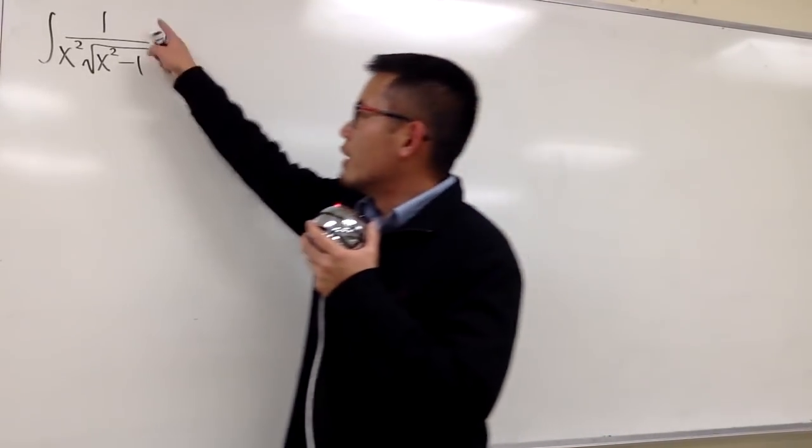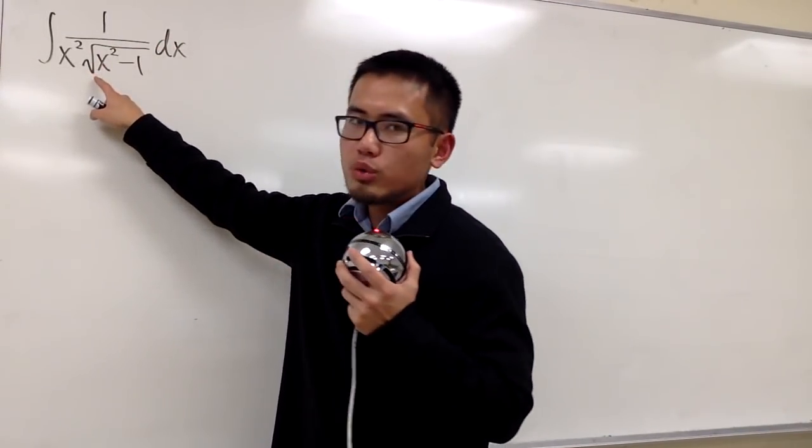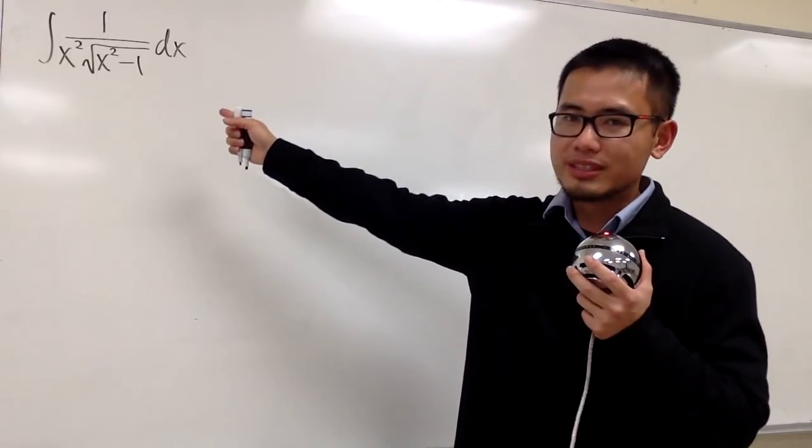I'm going to show you guys how to integrate 1 over x squared times the square root of x squared minus 1. In fact, we have to do trig sub right here.